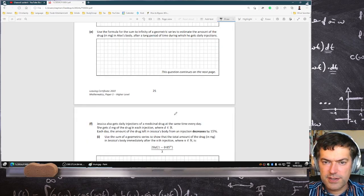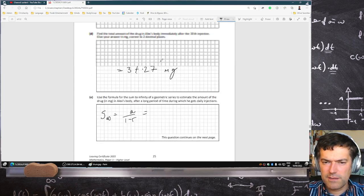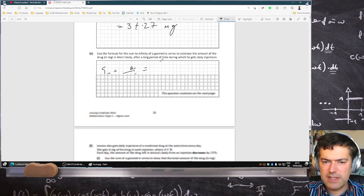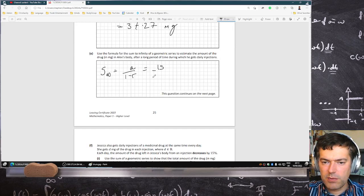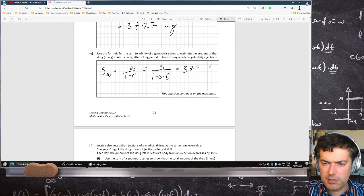Use the formula of sum to infinity. The amount of the drug in Alex's body after a long period of time. That's A over 1 minus R, which is the first term in that series is 15. 15 over 1 minus 0.6. That's 15 over 0.4, which is 37 and a half milligrams.